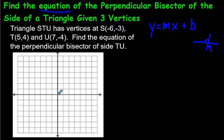So S is negative 6, negative 3. One, two, three, four, five, six, one, two, three, right there. There's point S, negative 6, negative 3. Then we have point T, which is 5, 4, so 5 across, one, two, three, four, five, one, two, three, four, there we go.